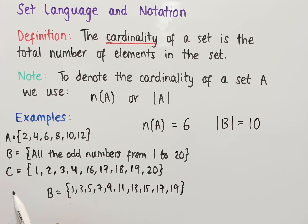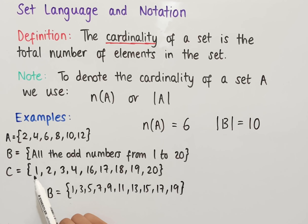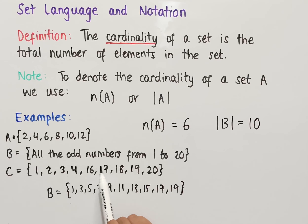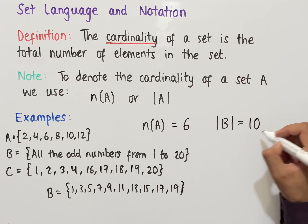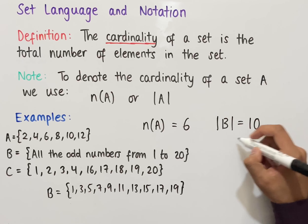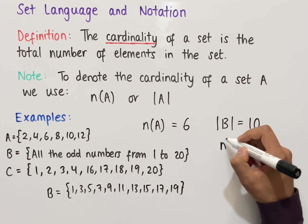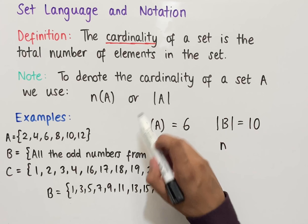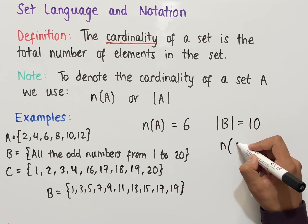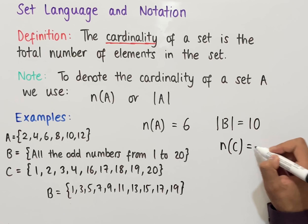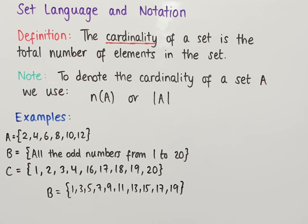If we wanted to work out the cardinality of C, we would just count the number of elements inside the set. Counting gives us 9 elements, so the cardinality of C — written using either notation, so let's use N(C) — equals 9.